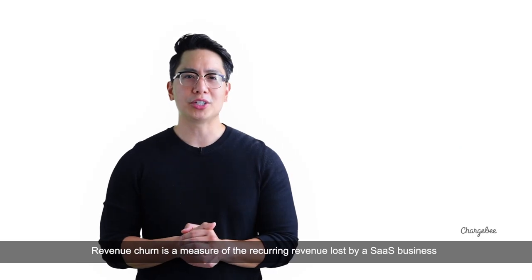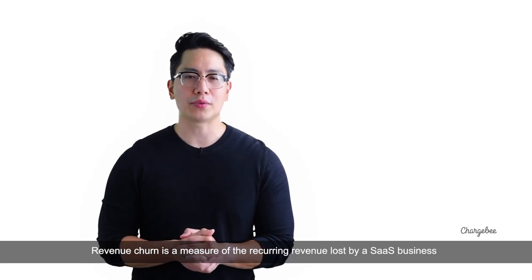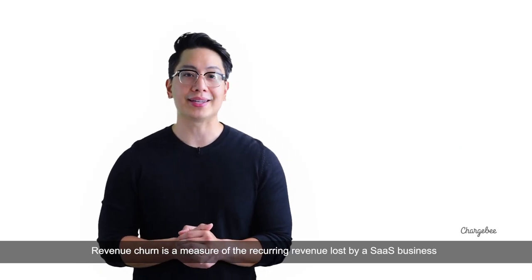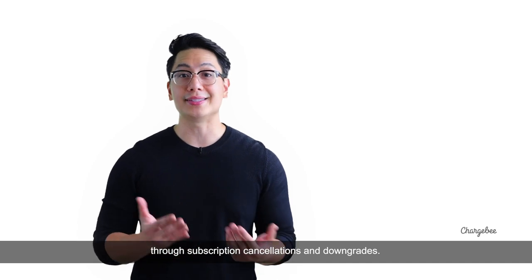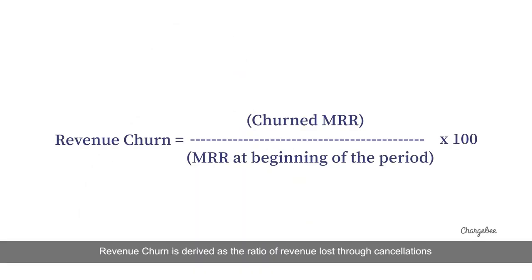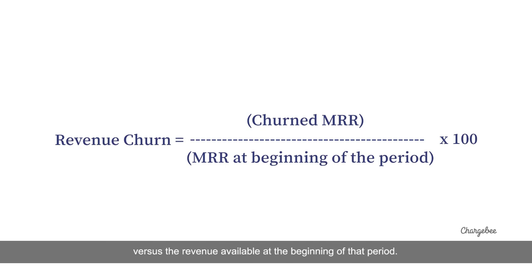Revenue churn is a measure of the recurring revenue loss by a SaaS business through subscription cancellations and downgrades. It is derived as the ratio of revenue loss through cancellations during a given period versus the revenue available at the beginning of that period, usually expressed as a percentage.